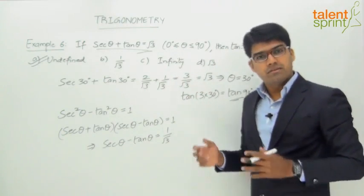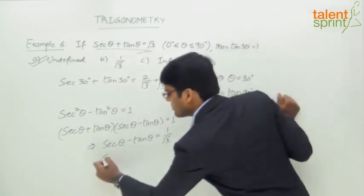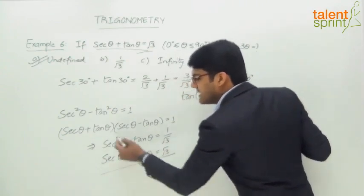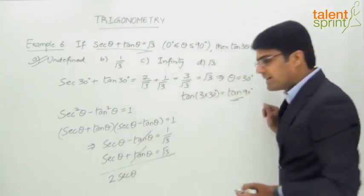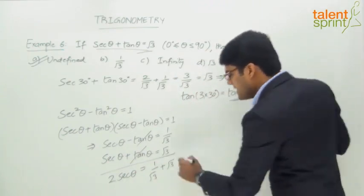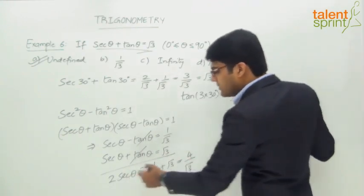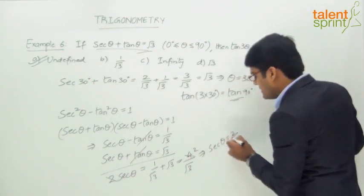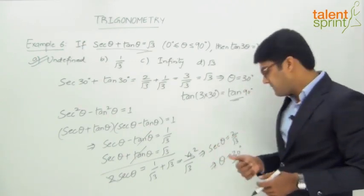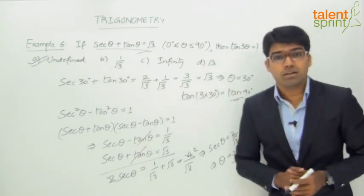Now we have two equations: sec θ + tan θ = √3 and sec θ − tan θ = 1/√3. Adding them: 2 sec θ = √3 + 1/√3. Taking √3 as LCM: 2 sec θ = (3 + 1)/√3 = 4/√3, so sec θ = 2/√3. This tells us θ = 30°. Therefore tan 3θ = tan 90° = undefined.